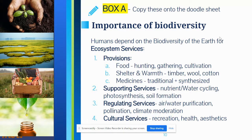The importance of biodiversity: humans depend on the biodiversity of the earth for ecosystem services. Number one, provisions — this means food, hunting, gathering, and cultivation. We eat other things that are alive, whether they're plant or animal.